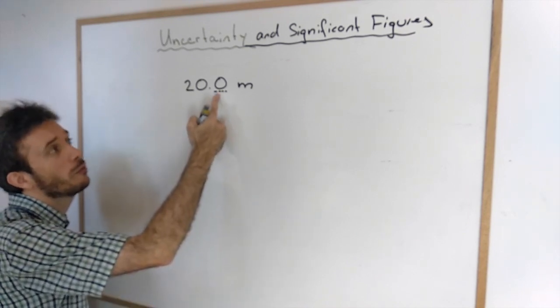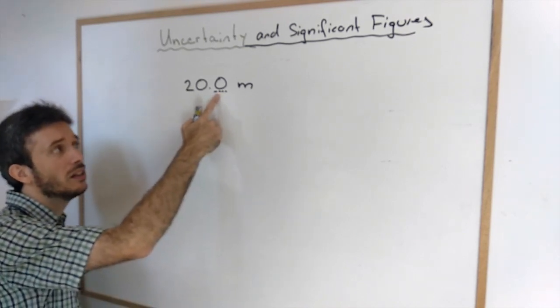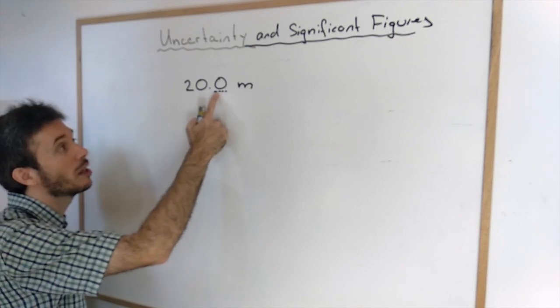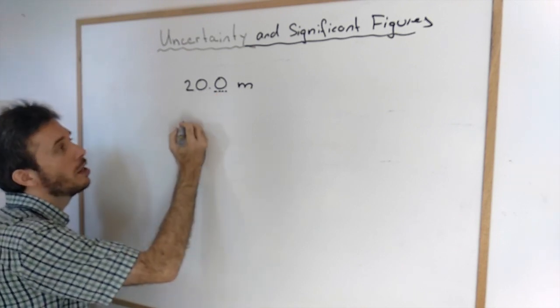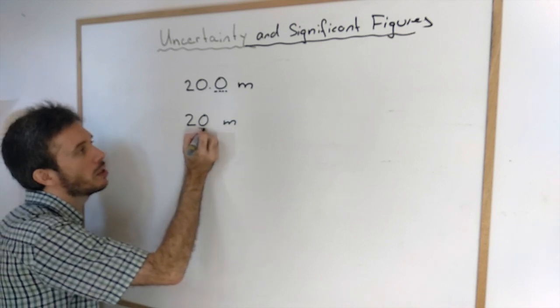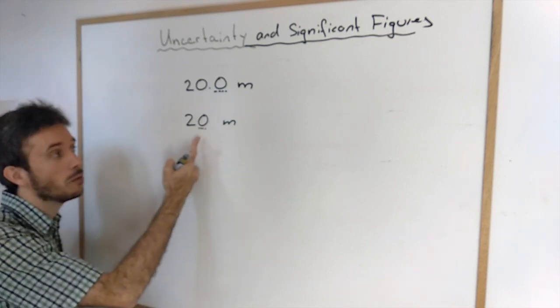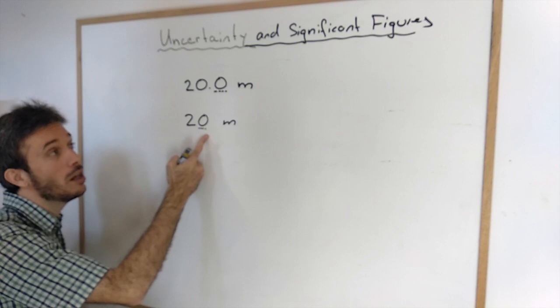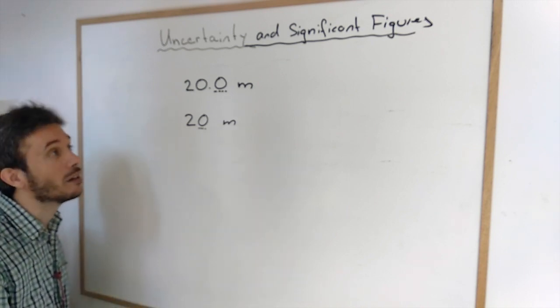So this one could have been a 1, could have been a 2, could have been anything else. This is the estimated digit. The last one is the estimated. If you only write 20, you're saying that 0 here is uncertain. So we could have had 21, we could have had 19. So this is what we do with significant figures.